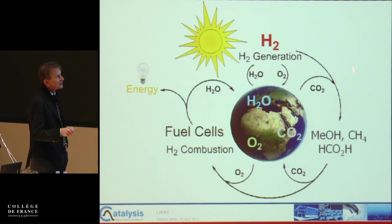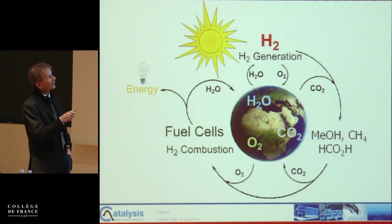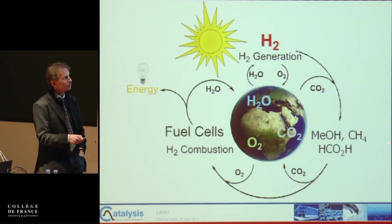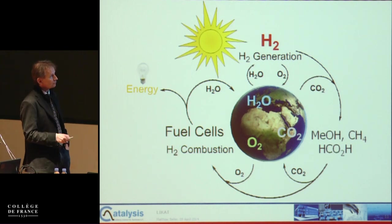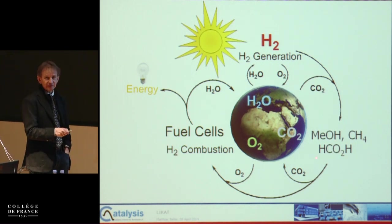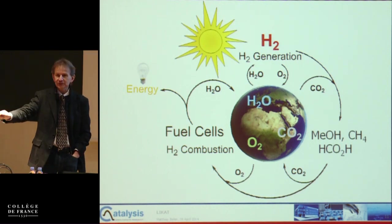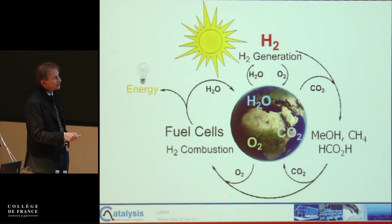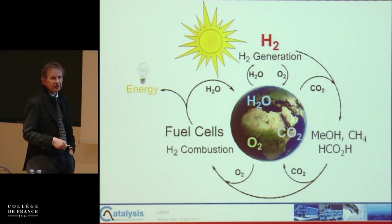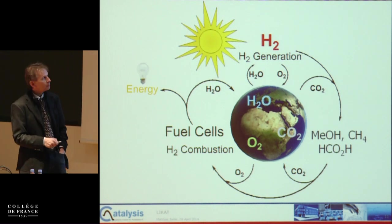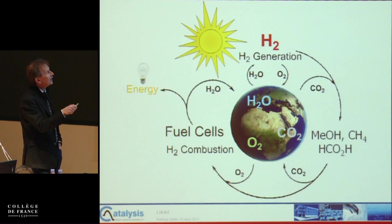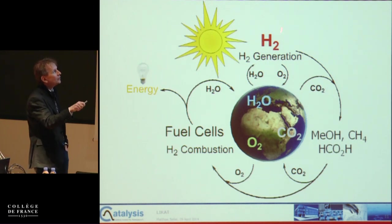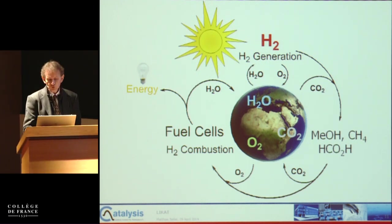This storable form of energy can be upgraded or stored more easily by chemical reactions — for example by reacting hydrogen with carbon dioxide to make chemical energy carriers like methanol, methane, or formic acid. If we want to use this energy again, we can oxidize or dehydrogenate it, do classical burning, or use fuel cells in a more energy-efficient way — producing energy when needed, along with water, which can be used with sunlight again to produce a storable energy vector.